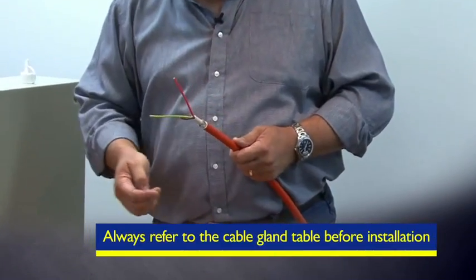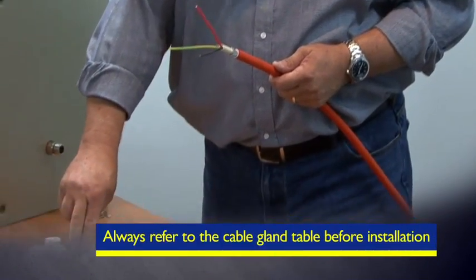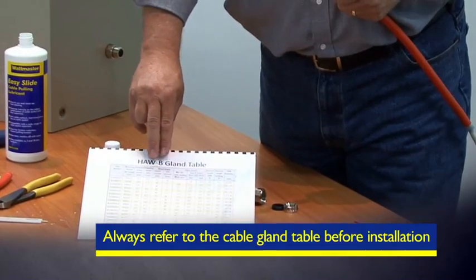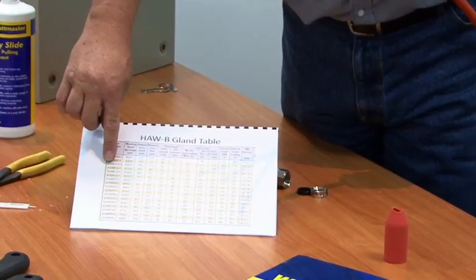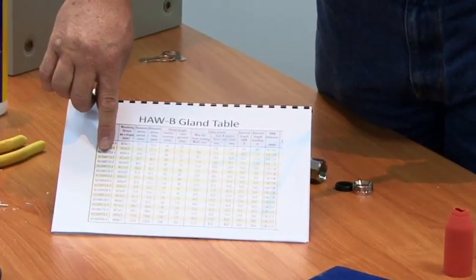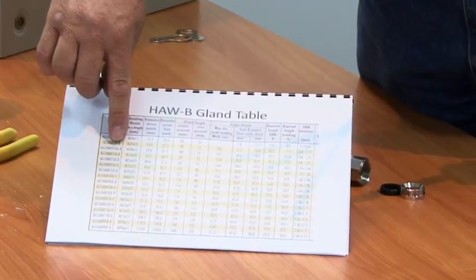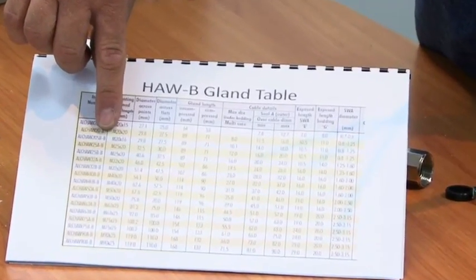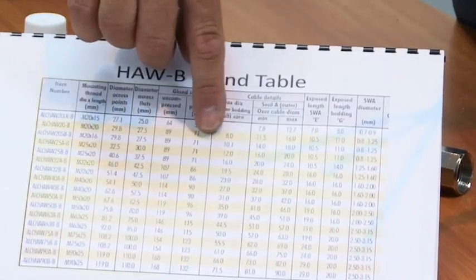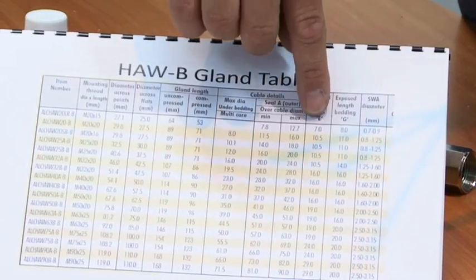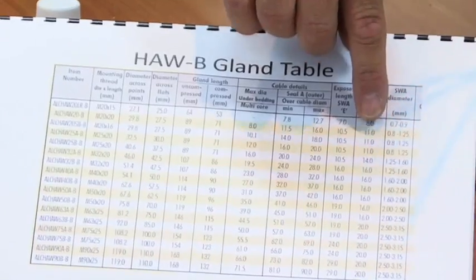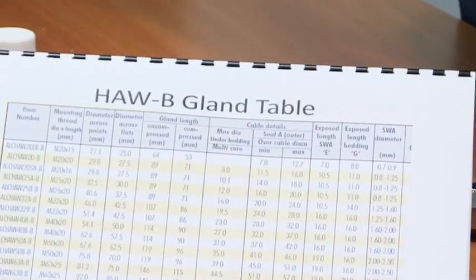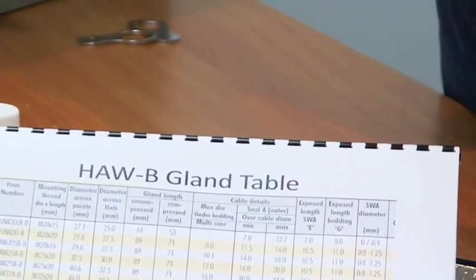If we look at our HAW-B gland table, you'll note the difference in part number: ALC HAW-20B-B, with B being barrier. Looking at the fitment details, it's the same for the cable and same length of exposed steel wire armour, but we've got another bedding dimension here, G, which is 11 millimeters long. Instead of having an arbitrary length here, this is another critical dimension we must consider.